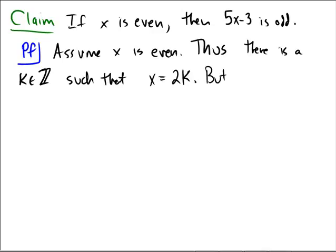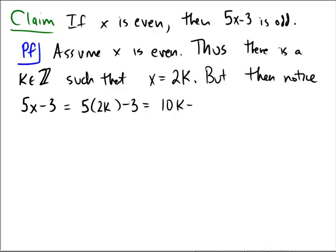But then what do we notice? But then notice 5x minus 3 equals 5 times 2k minus 3. That's equal to 10k minus 3. And notice that this is equal to 2 times 5k minus 2 plus 1.